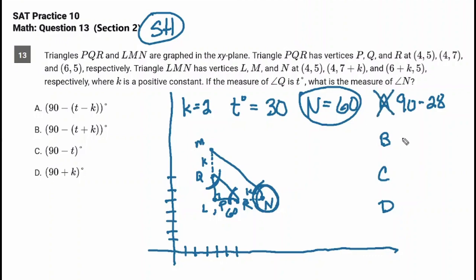B, 90 minus what? T plus K, so 30 plus 2. 90 minus 32, and you can ballpark that. Is that going to be 60? No. C, 90 minus 30, right? T is 30. Is that going to be 60? Hey, that's 60, so we're going to keep that one.